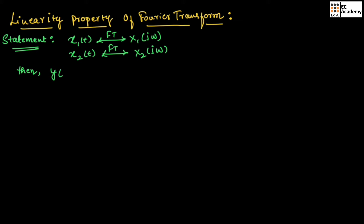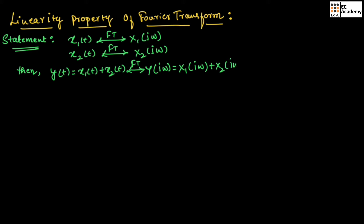Then y of t, which is equal to x1 of t plus x2 of t. If we take the Fourier transform of this, we should get Y of j omega, that is equal to X1 of j omega plus X2 of j omega. This is the statement of the linearity property of Fourier transform.